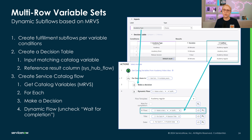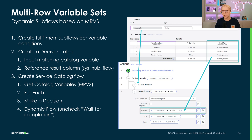Then we'll get the variables from the catalog item by choosing the multi-row variable set. Now we'll iterate through the result set with a foreach logic. Then we'll make a decision for each entry and use the decision result and other variable set row data to kick off a dynamic flow. For this scenario, we want to make sure to uncheck the wait for completion option if we're looking for quasi-parallel execution. If we leave it active, the flow will not proceed to the next foreach entry until the first is fully processed.